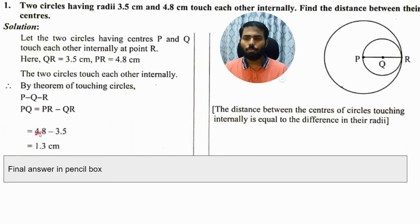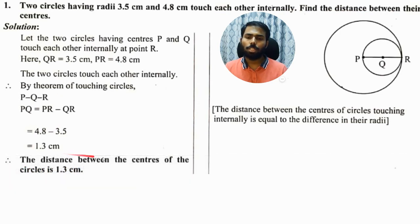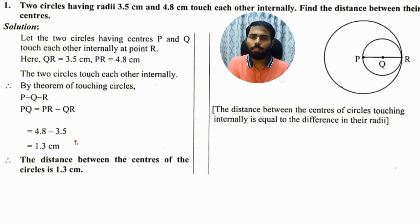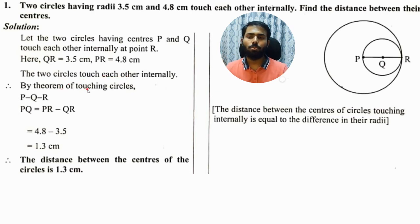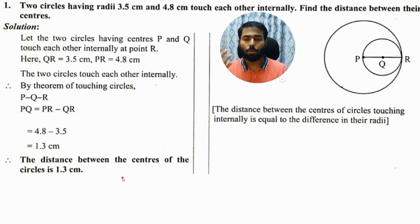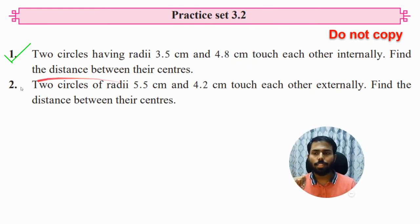Now write the reason in a complete sentence: 'The distance between the centers of circles touching internally is equal to the difference of their radii.' Then substitute and calculate: PQ equals PR minus QR, so PQ equals 4.8 minus 3.5, which equals 1.3 centimeters. Write the final answer in a pencil box. You must write the diagram, explain the diagram, apply the theorem, give the reasoning as a complete sentence, substitute and calculate, and box the final answer — all these steps have different marks assigned to them.